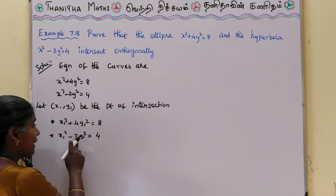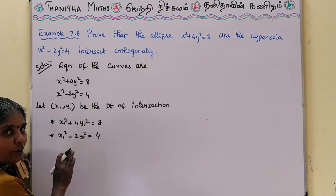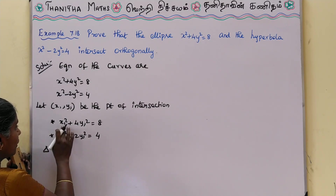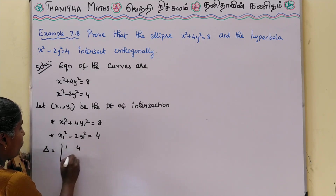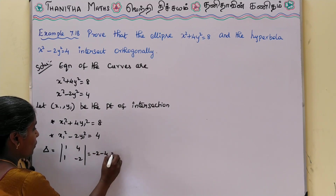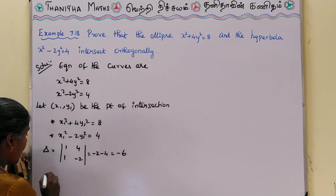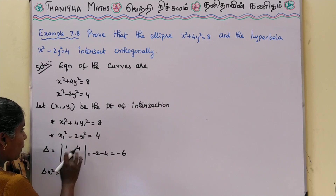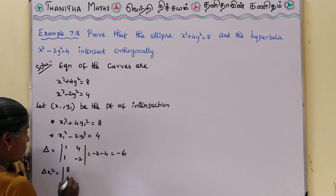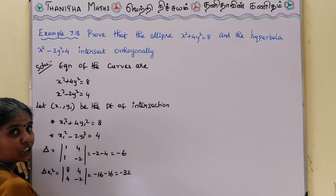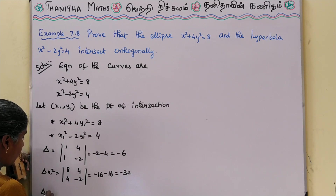If we solve for x1² and y1² using Cramer's rule: delta is equal to the determinant of coefficients — 1, 4 and 1, -2 — so delta = (1)(-2) - (4)(1) = -2 - 4 = -6. Delta x1² uses the matrix with 8, 4 and 4, -2, giving delta x1² = -16 - 16 = -32.